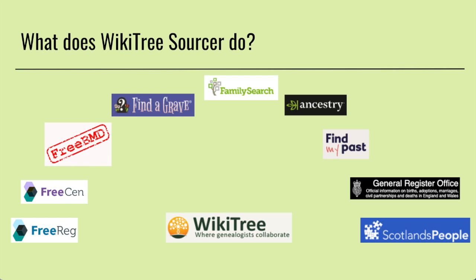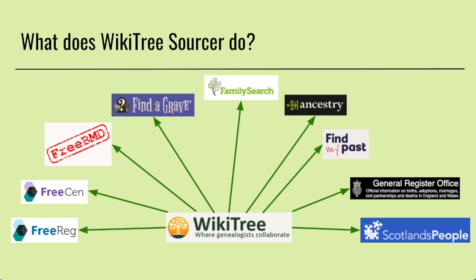As you know, WikiTree doesn't have any collections of records of its own. What we do is we search for records in other places and then create source citations for them on WikiTree. So what the extension does is it will extract information from the WikiTree profile and then build a search for various websites. And then if you find a record on those websites that you want to cite, it will extract all the information from the record and build a source citation in just one click, which you can then put onto your WikiTree profile.